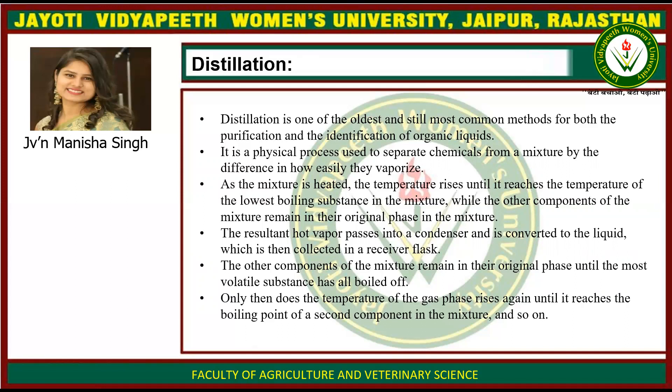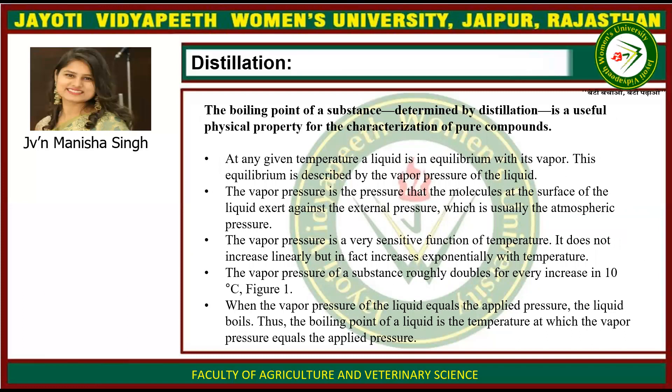The other components of the mixture remain in their original phase until the most volatile substance has all boiled off. Only then does the temperature of the gas phase rise again until it reaches the boiling point of the second component in the mixture, and so on. The boiling point of the substance is determined by the distillation and is a useful physical property for the characterization of pure compounds.